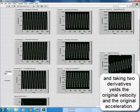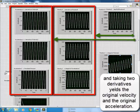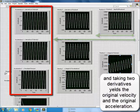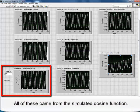And taking two derivatives yields the original velocity and the original acceleration cosine function. All of these came from the simulated cosine function.